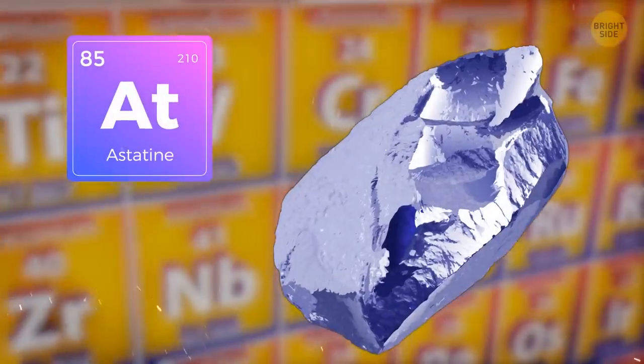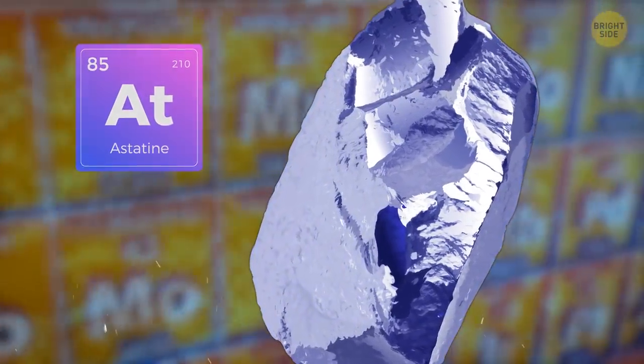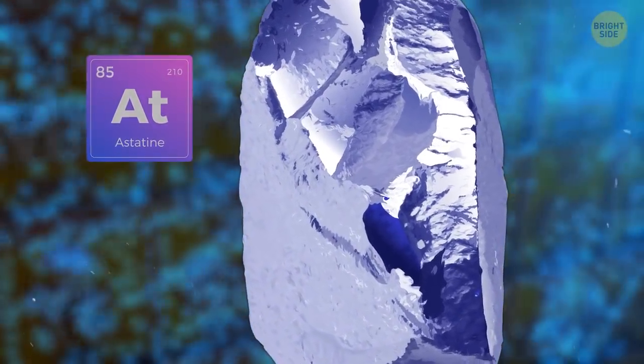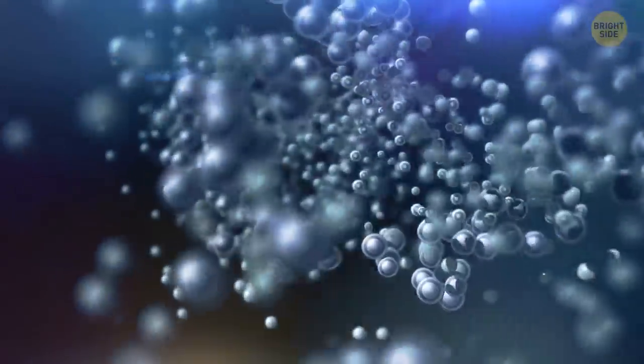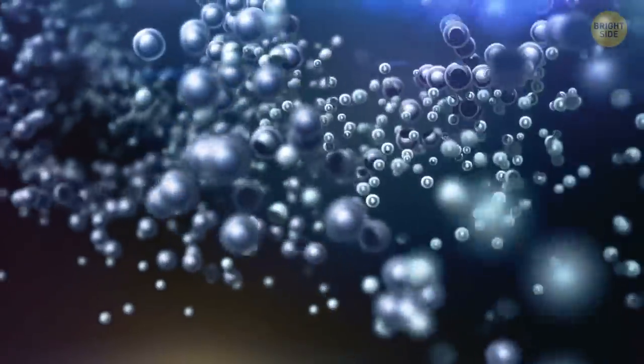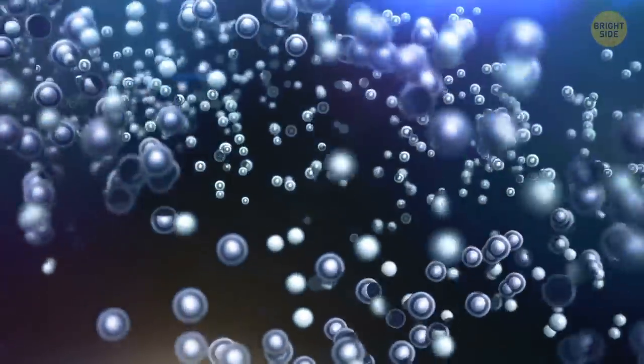Meet astatine, the rarest element on the planet. There are about 0.8 ounces of this substance found in the whole world. The rate of its decay is equal to the speed of its formation. Therefore, the amount of the substance in nature doesn't change.